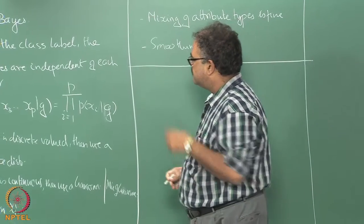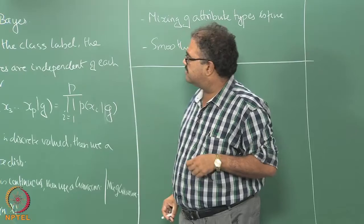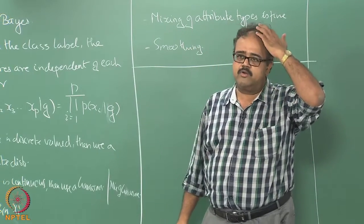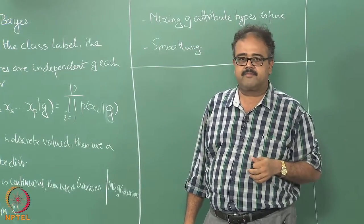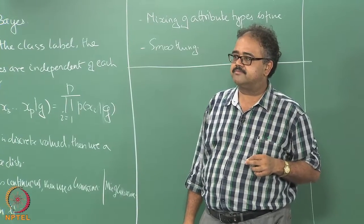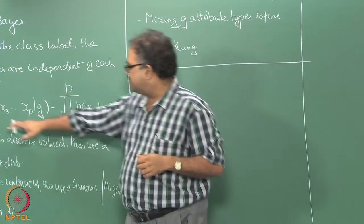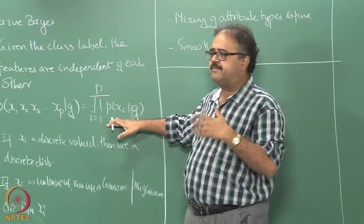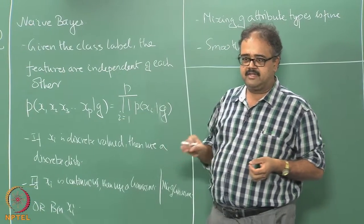One of the things that you could do along the lines of independence assumptions is to try to be more nuanced about your independence. What do I mean by that? Do not just make the assumption that everything is independent of one another given the class.